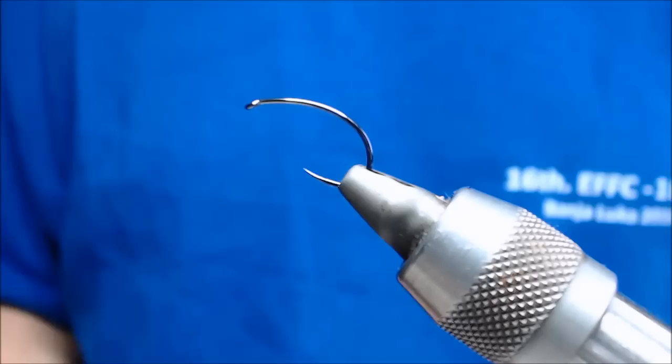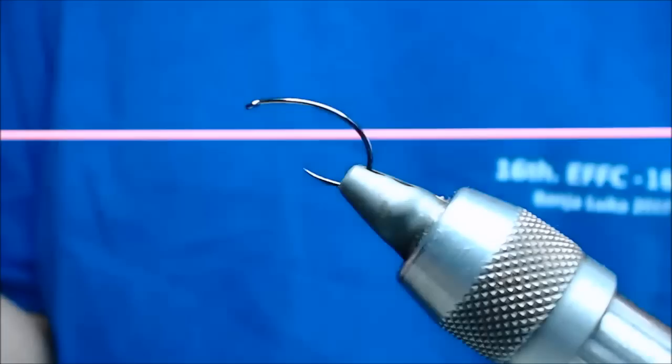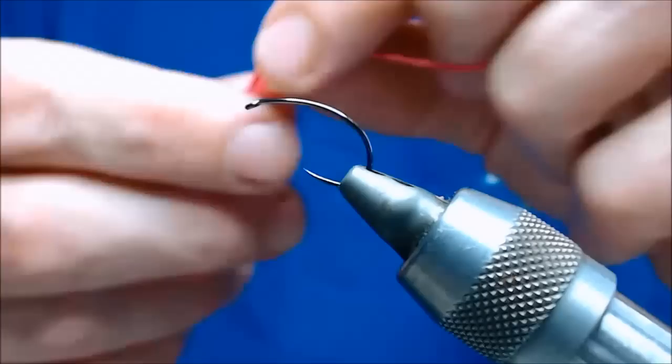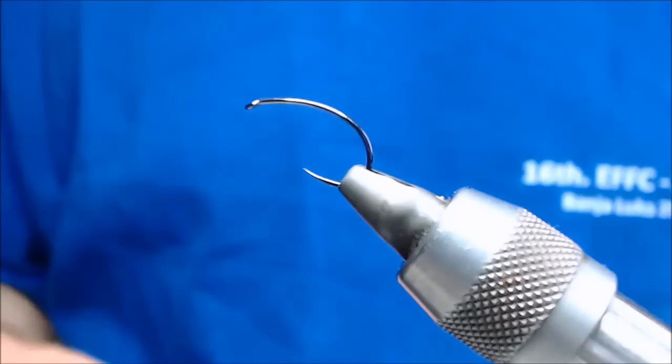Also quick point: don't use any varnish when you're tying this fly because the varnish will eat away at the material. But that's the material, you can see how far it stretches, really really stretchy. And I've caught a lot of fish on this, especially in the UK.